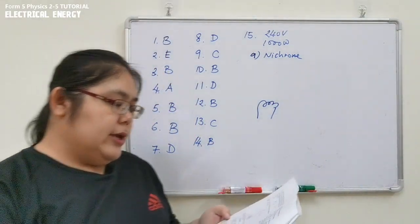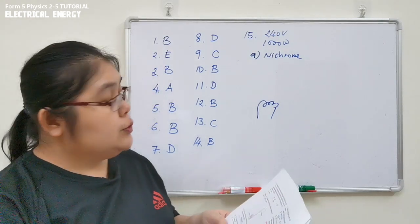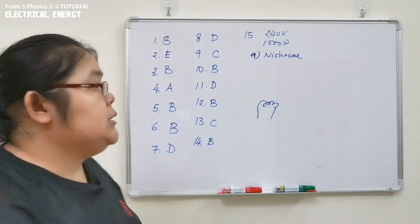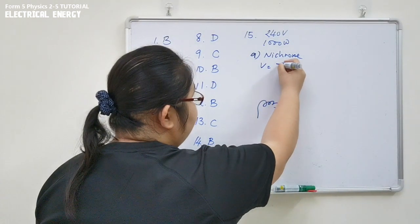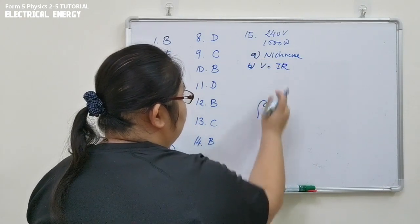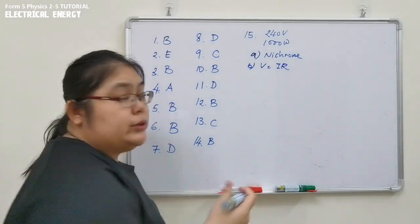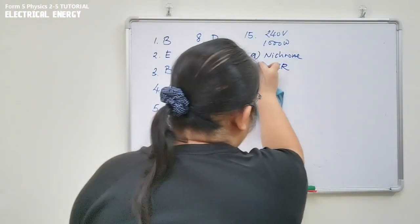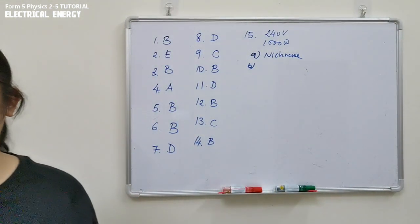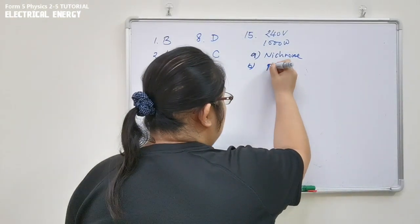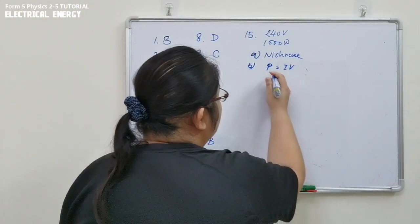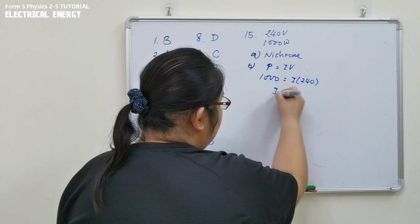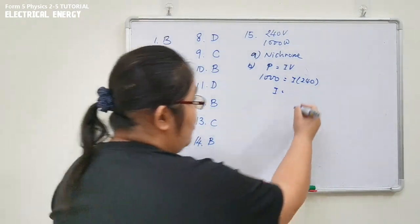Now for part (b), the immersion heater is connected to 240 volts. We need to calculate the current through the heater. We cannot use V = IR because we don't know R, so we use P = VI. With P = 1000 W and V = 240 V, the current is 4.17 amperes.